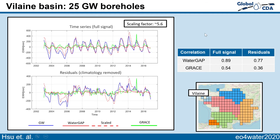La Vilaine is the smallest basin among all six basins. Although it is small, it still has a really high correlation. However, for GRACE the correlation is not that high, probably because GRACE is not able to resolve so many details in small basins. The scaling factor for this basin is also the highest at 5.6.